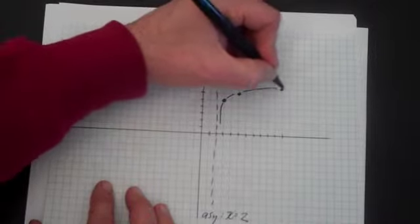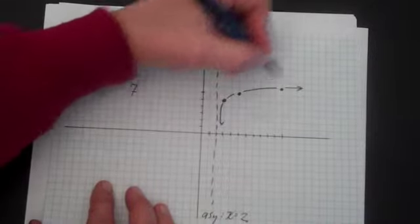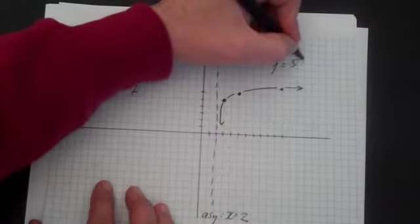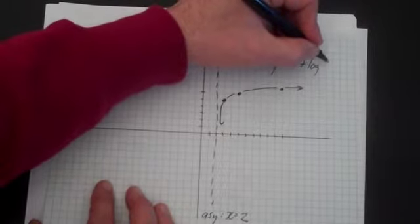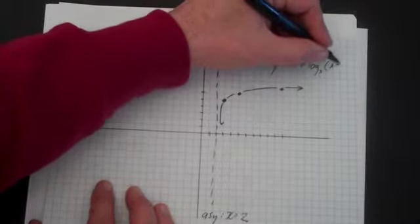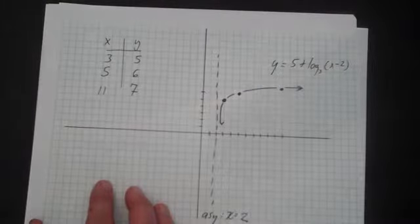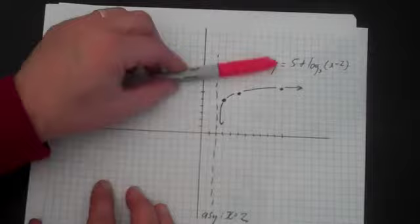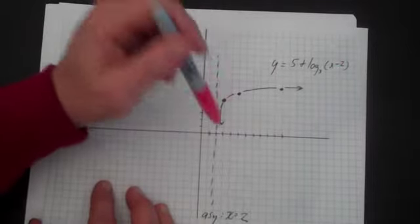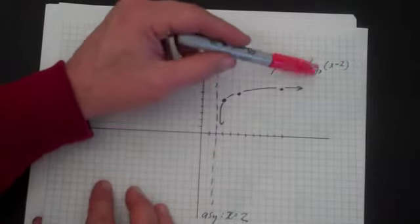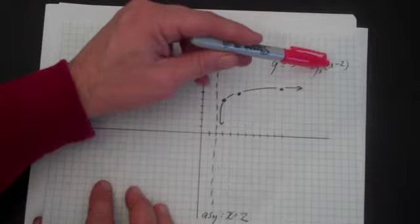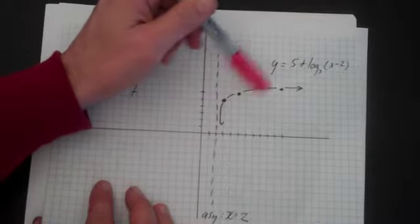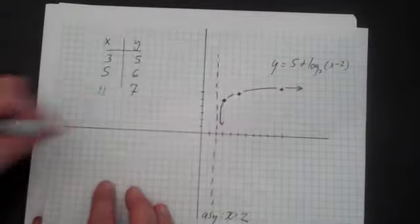Flattens out very quickly. And that's your graph of y equals 5 plus log base 3 of x minus 2. Again, the 5 moved the initial graph up 5. The 2 moved it right 2. All logs where b is greater than 1 have basically the same shape. All the 3 does is change how steep it is.